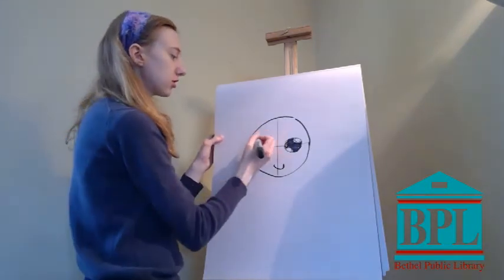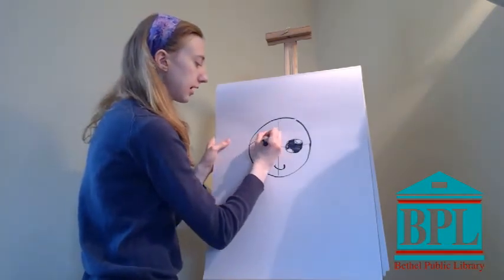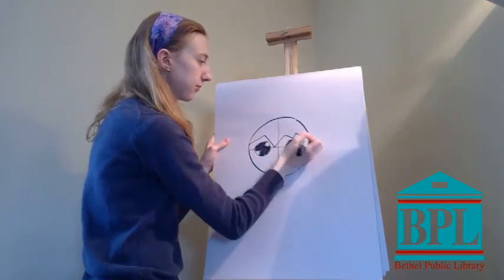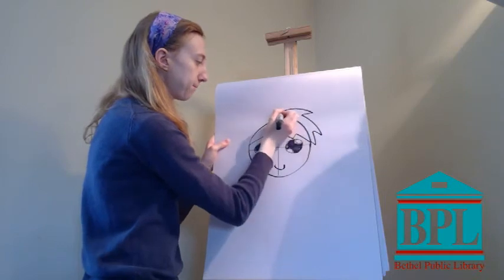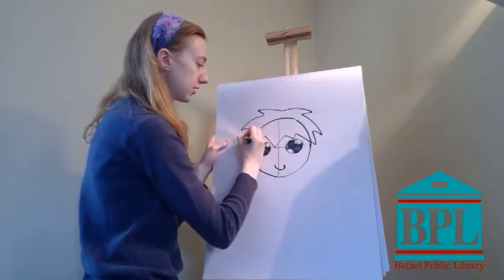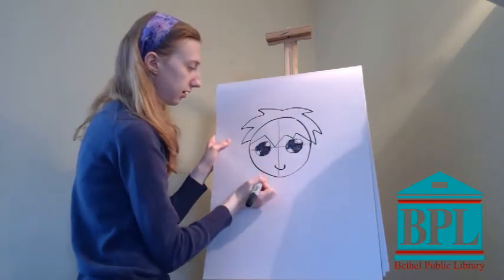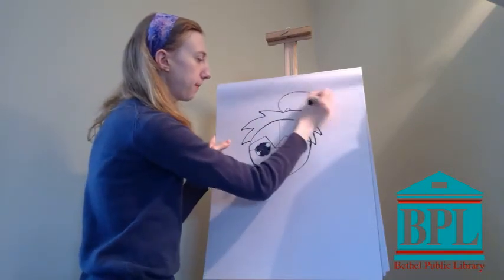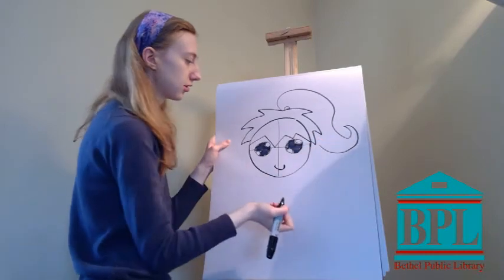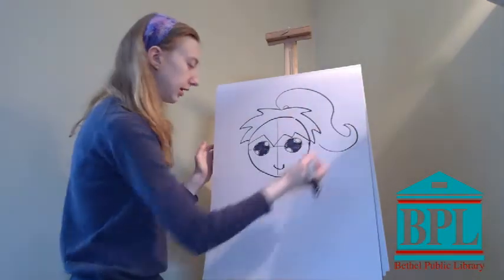So for the hair, I usually just kind of do some zigzags. I'm going to do some like zigzag triangles up at the top, zigzag triangles, and maybe I'm going to give them a ponytail like that, a little circle, like curly line.